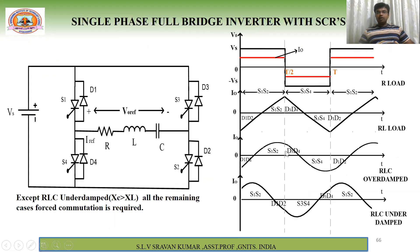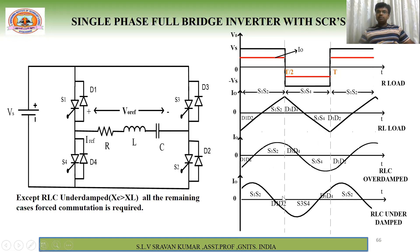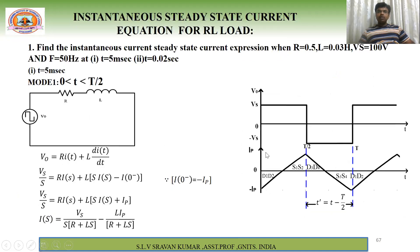For RL load, unlike RLC or pure R load, the current waveform is not purely sinusoidal, so we can't simply write i(t) = Im·sin(ωt ± φ). The instantaneous steady-state current equation must be derived. For R load, i(t) = i0 (constant). For RL load the expression requires derivation. Problem: find the instantaneous steady-state current when R = 0.5 Ω, L = 0.03 H, Vs = 100 V, f = 50 Hz — at t = 5 ms and at t = 0.02 s.